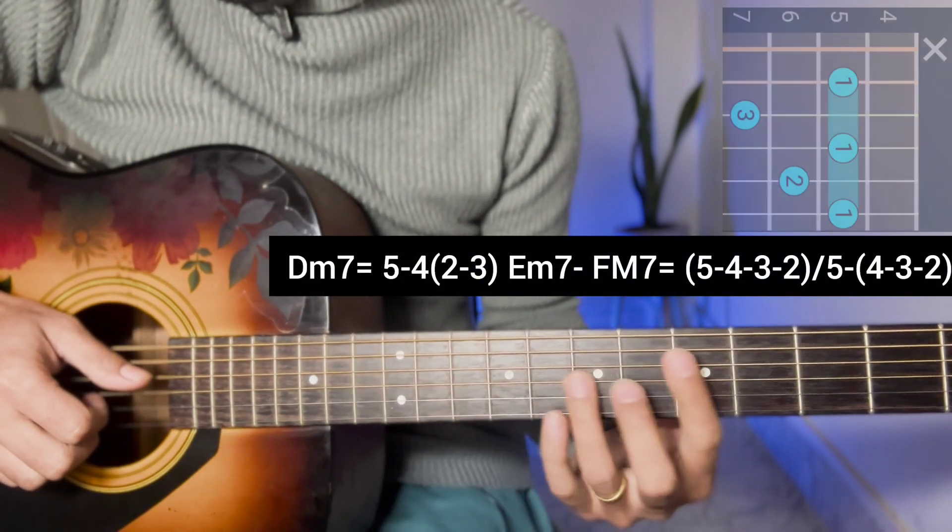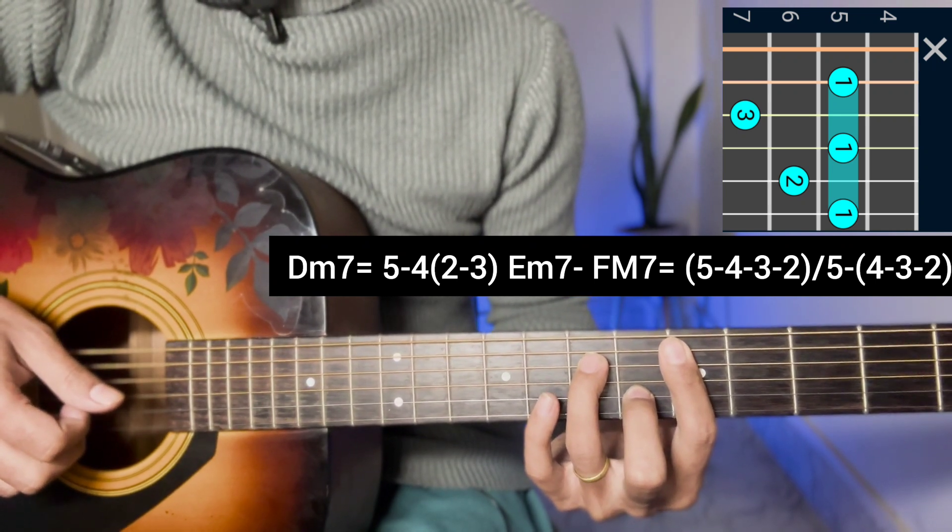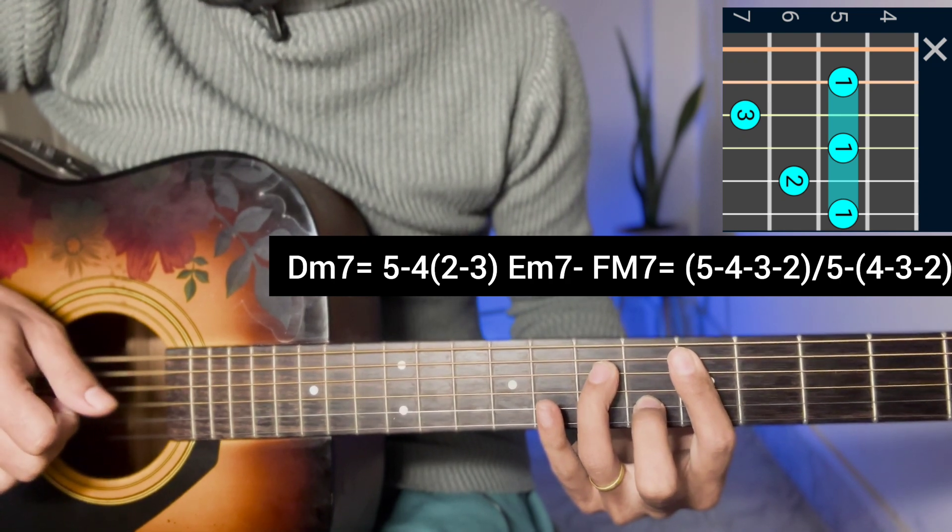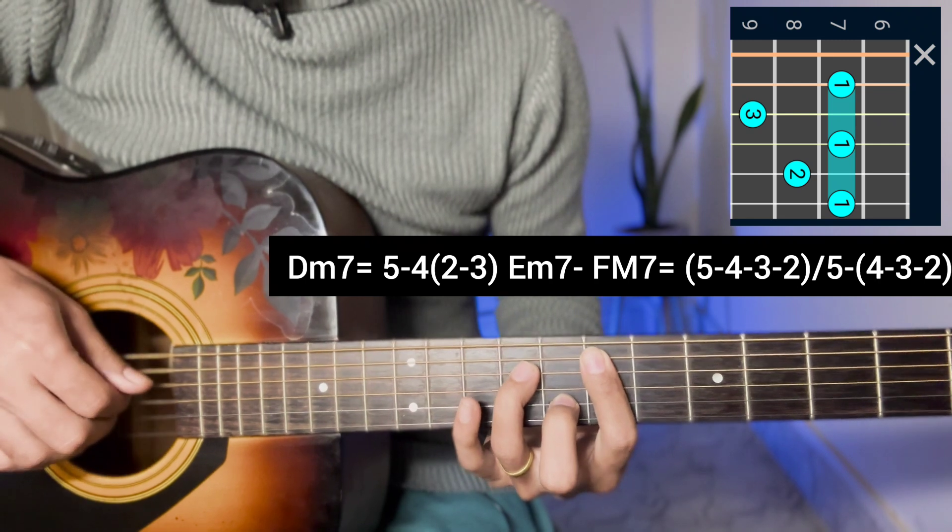So if you want to play on the fifth string, fifth fret, that's a D minor 7 chord. You play 5-4-2-3 and pick. If you want to play on the seventh fret, that's E minor 7 chord, 5-4-2-3 and pick.